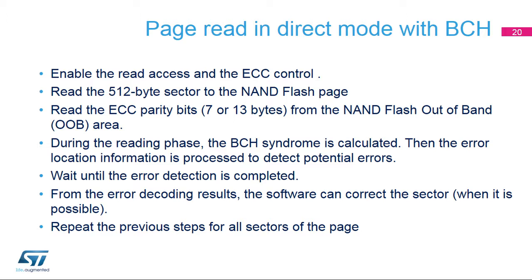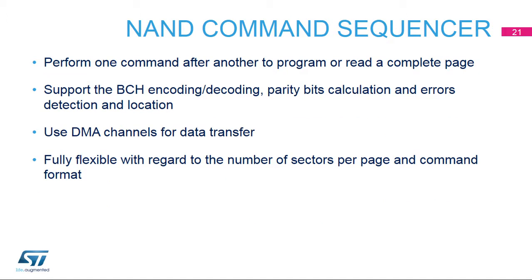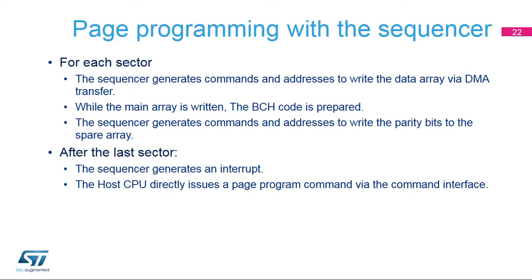Repeat the previous steps for all sectors of the page. Data and ECC byte accesses can be managed automatically by the FMC command sequencer using DMA channels for data transfer. One DMA channel is required for write operations and two DMA channels for read operations. The sequence is performed at page level, each page being one or several 512-byte sectors. The error correction is applied to each sector with the redundant bits located in the spare array.